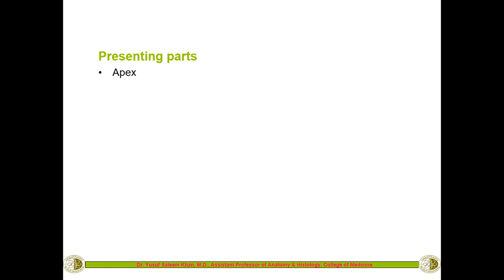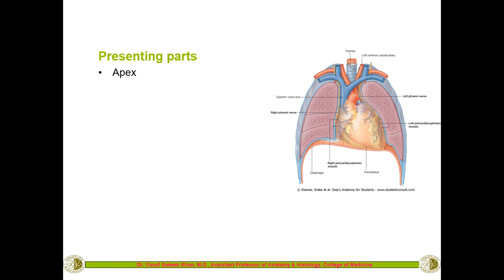The lung looks like a pyramid. It has an apex at the top and a base at the bottom, which is in contact with the dome of the diaphragm. The diaphragm separates the thoracic contents from the abdominal cavity. Above the dome of the diaphragm will be the base of the lung, and at the top is the apex.